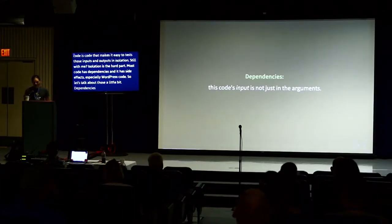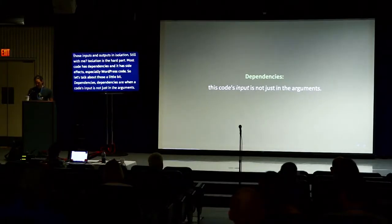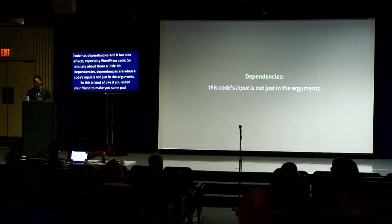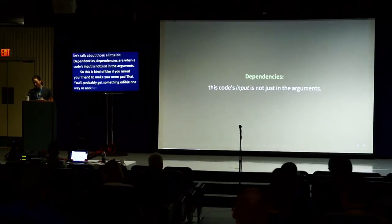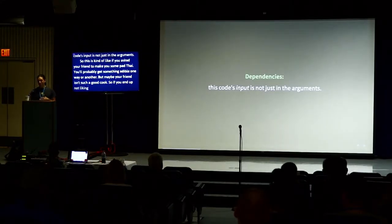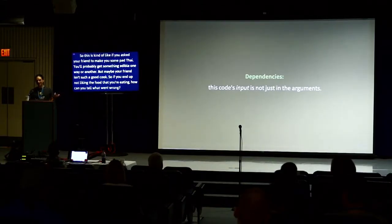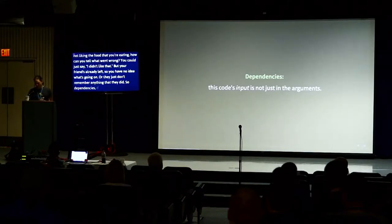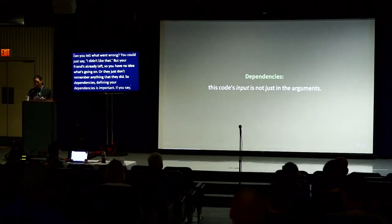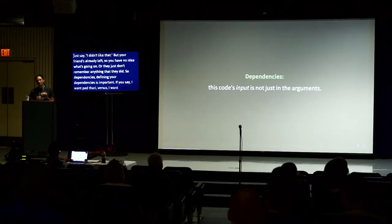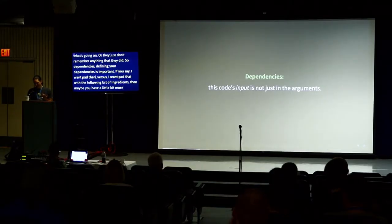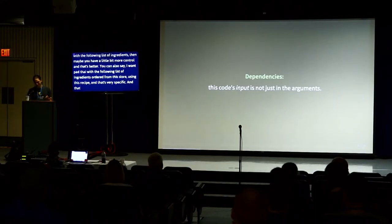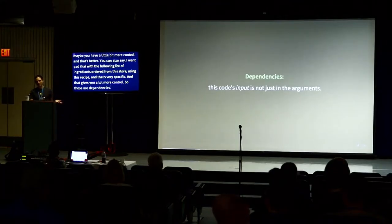Dependencies are when a code's input is not just in the arguments. This is kind of like if you ask your friend to make you some Pad Thai — you probably get something edible, but maybe your friend isn't such a good cook. If you end up not liking the food, how can you tell what went wrong? Defining your dependencies is important. If you say 'I want Pad Thai made with the following list of ingredients,' you have more control. You can even specify the store and the recipe — those are dependencies you're defining rather than leaving them up to the code to figure out.